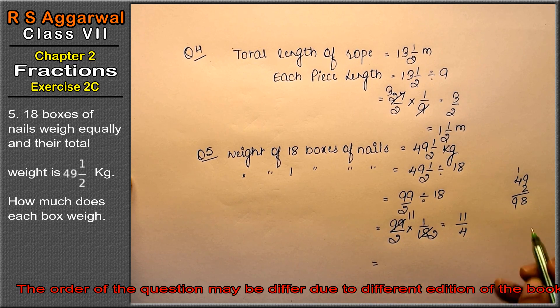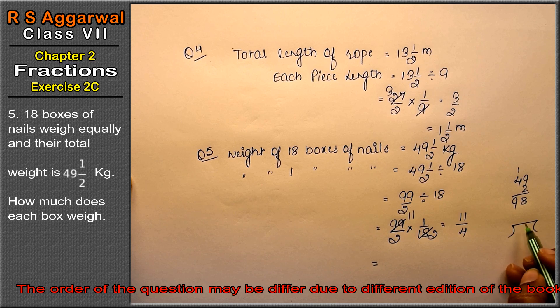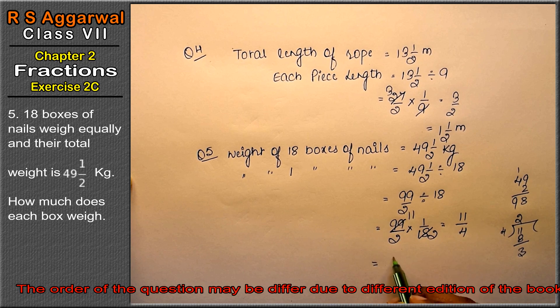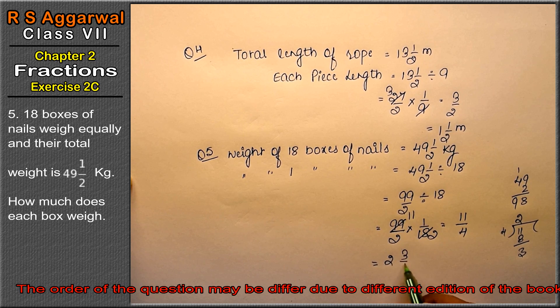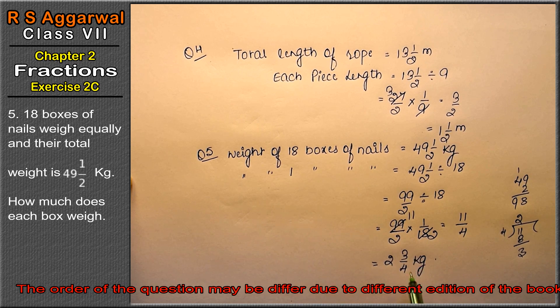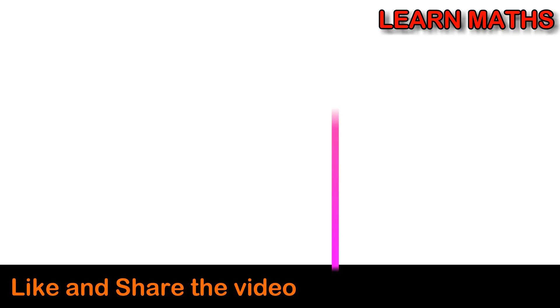Now we will do this in a mixed fraction because the top is bigger. 4 times 2 is 8, remainder is 3, so 11 is 8 plus 3. So what happened? 2 whole 3/4 kg is the answer for one box. Thank you!